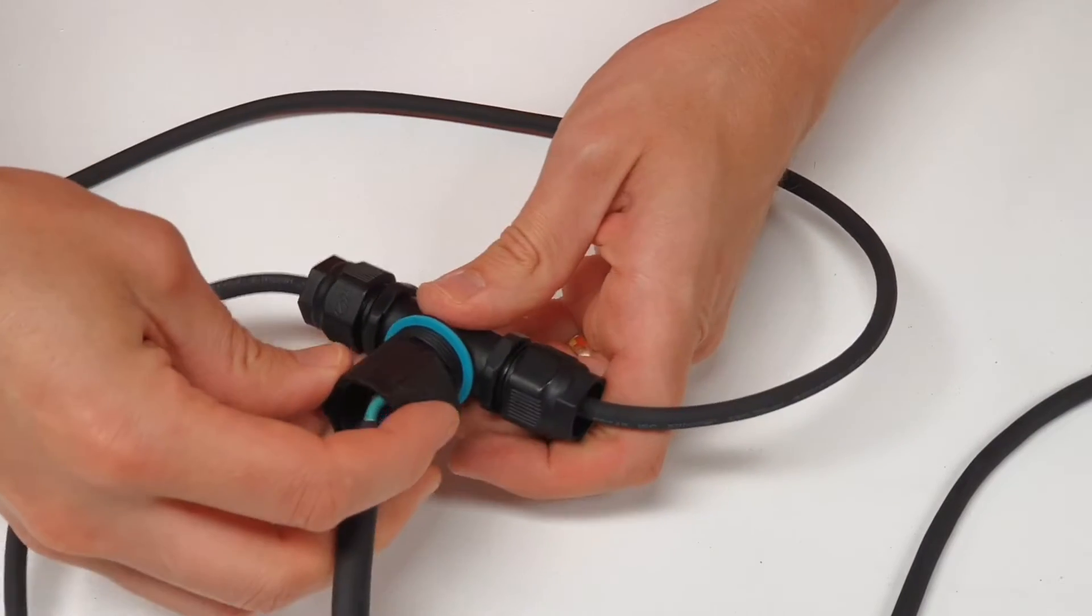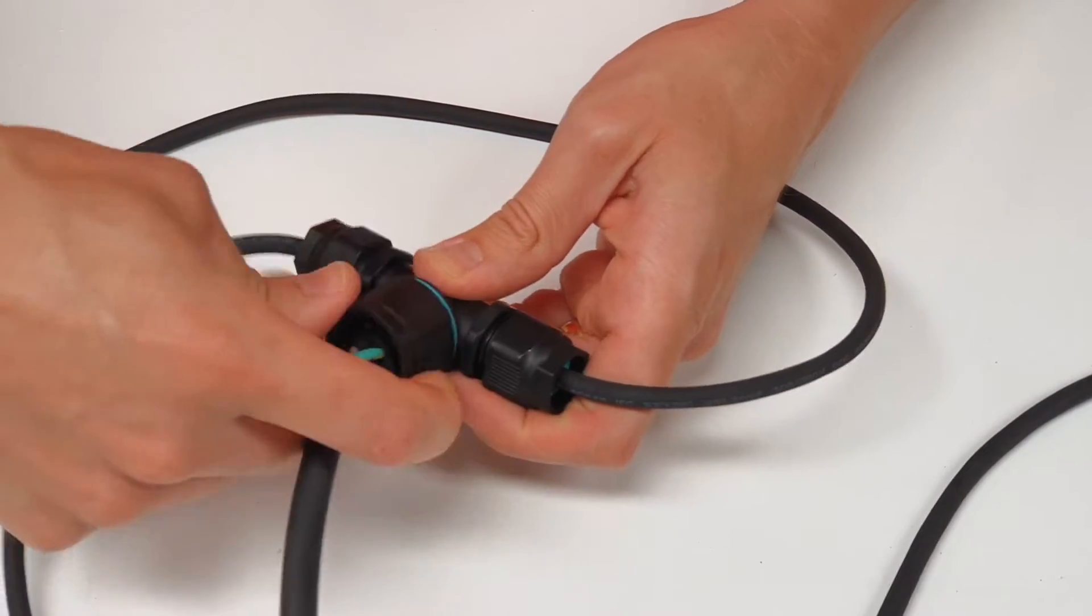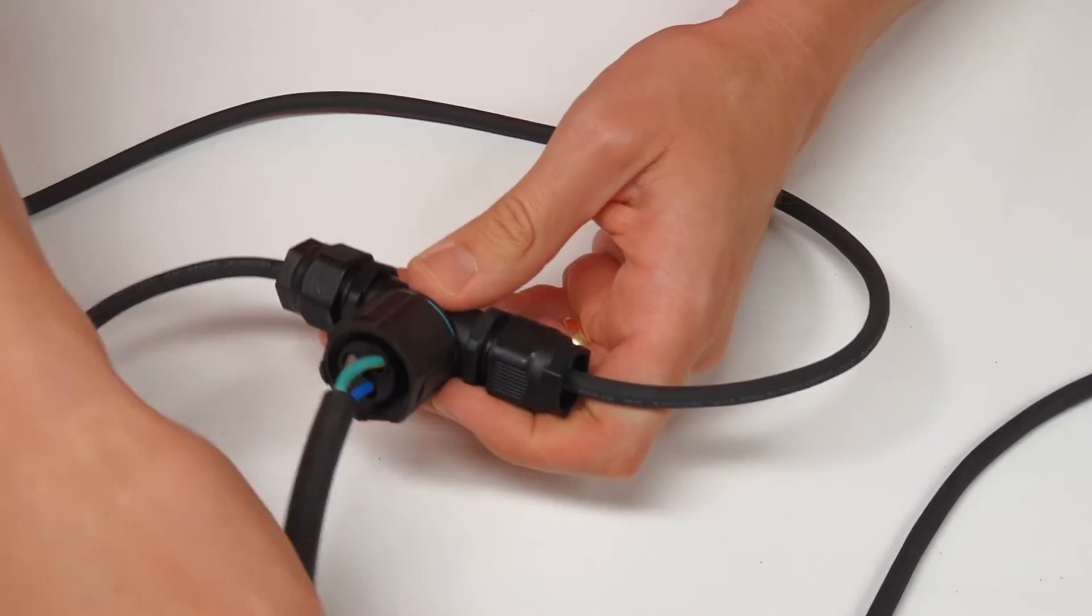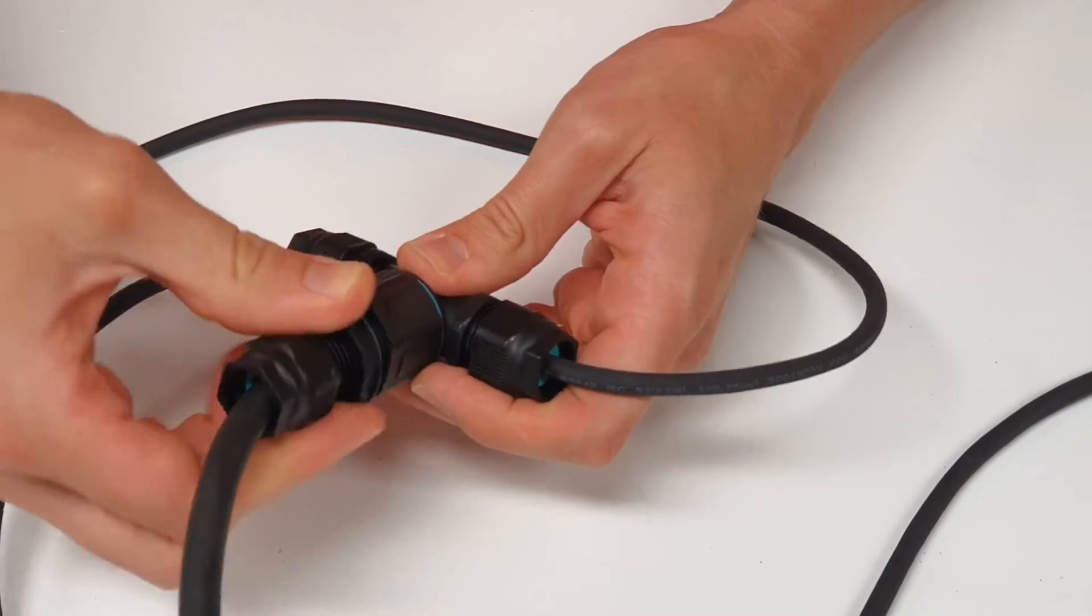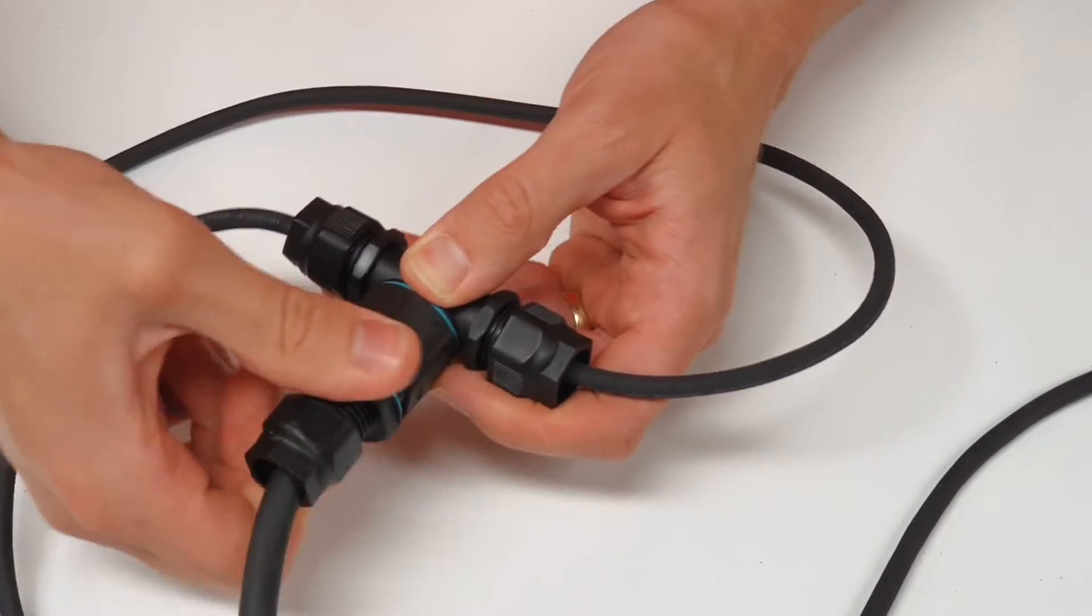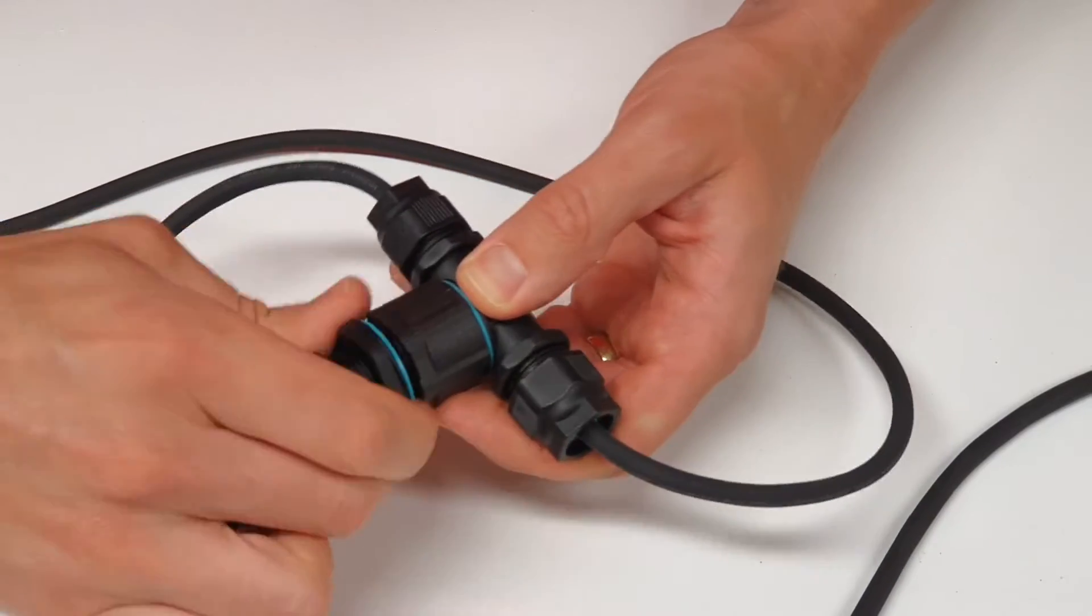Then this has two parts to it. The first one screws on and acts as a kind of enclosure for the connections. Then once that part is tight you screw up the gland part at the top to seal up around the cable and that's it pretty much sorted.